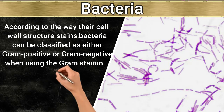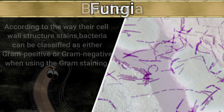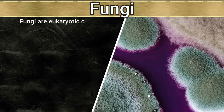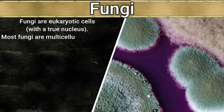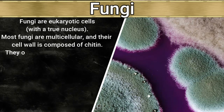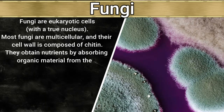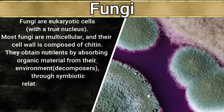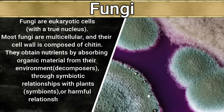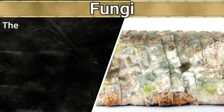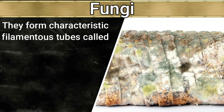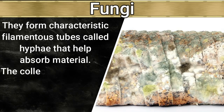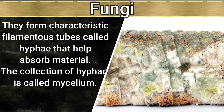Fungi are eukaryotic cells. Most fungi are multicellular and their cell wall is composed of chitin. They obtain nutrients by absorbing organic material from their environment through symbiotic relationships with plants or harmful relationships with the host. They form characteristic filamentous tubes called hyphae that help absorb material. The collection of hyphae is called mycelium.